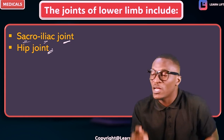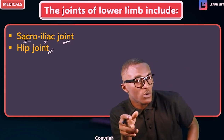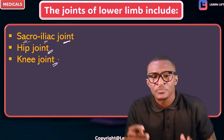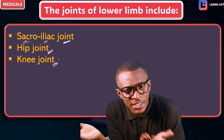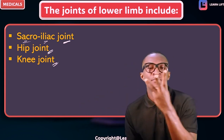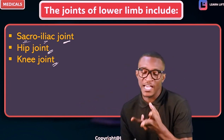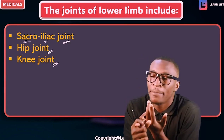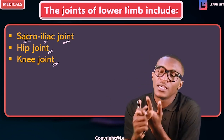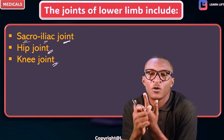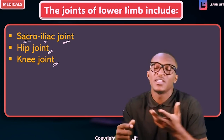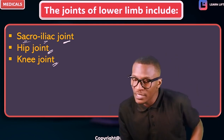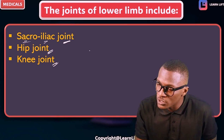We are listing the joints from the lower limb. The next joint is what we call the knee joint. What forms the knee joint? The knee joint is formed by three bones — the distal part of the femur, the upper part of the tibia, and the patellar bone, which is the largest sesamoid bone. So that's the knee joint.